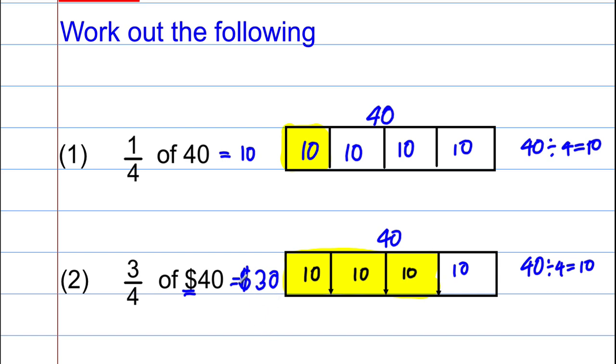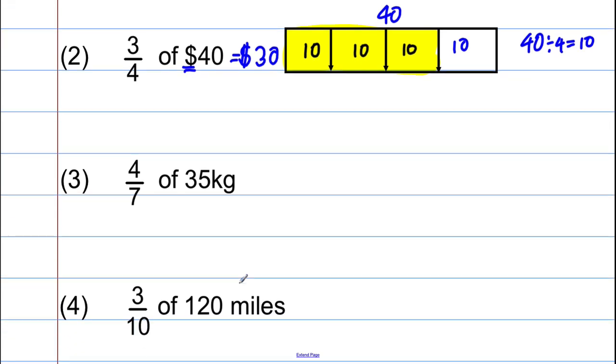Okay, let's keep going. Just another two where the numbers are ever so slightly trickier. Four sevenths of 35 kilograms. Again, we have units. So let's draw out our box.